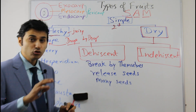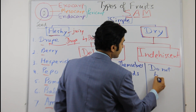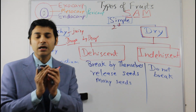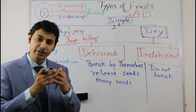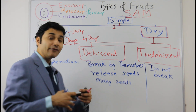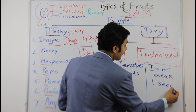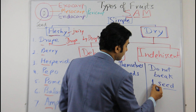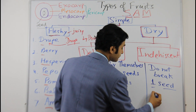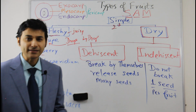In indehiscent fruits, they do not break by themselves at all. They are a tightly packed fruit that will not break and will not release seeds. This is because they do not have a large number of seeds to liberate — generally there is only one seed per fruit, which is why they are called indehiscent fruits.